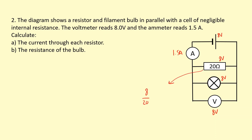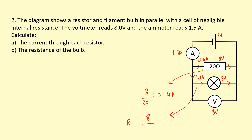Applying Ohm's law to the individual resistor: 8 divided by 20 gives me 0.4 amps. For the bulb, I don't know the resistance yet, but I can work out the current. If there's 1.5 amps going through the ammeter and only 0.4 amps is flowing down this route, the remainder must be going through the bulb: that means 1.1 amps is going down this route. None of it goes through the voltmeter, so the current through the bulb is 1.1 amps. Now applying Ohm's law: 8 volts divided by 1.1 amps gives a resistance of 7.3 ohms.